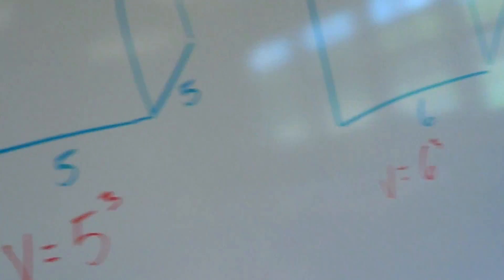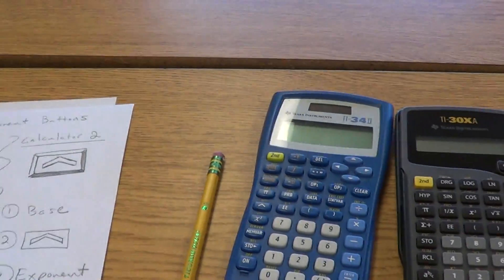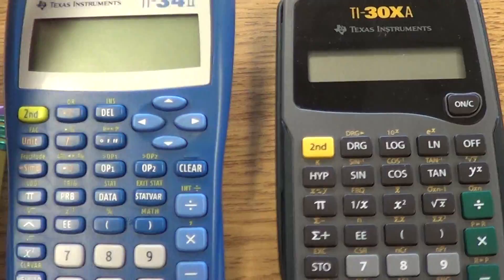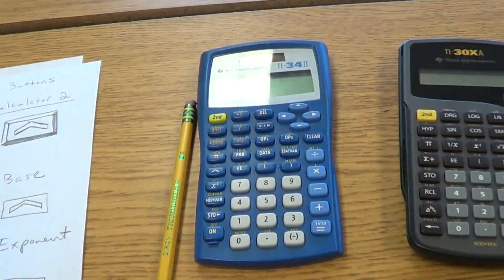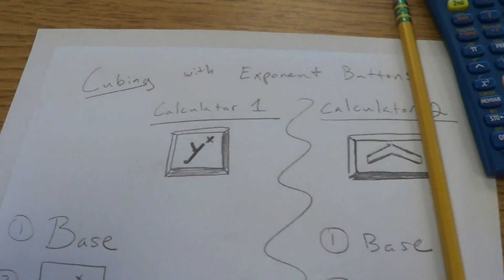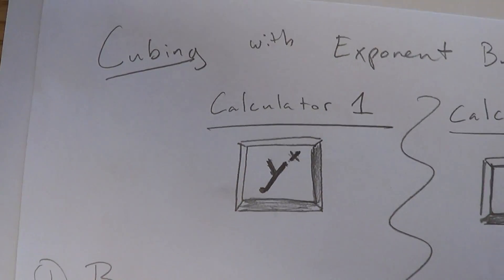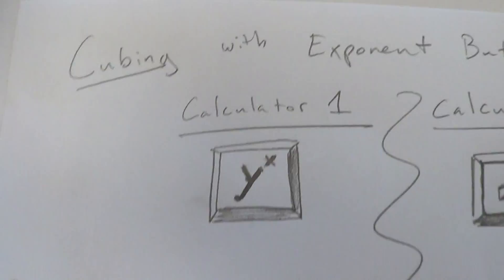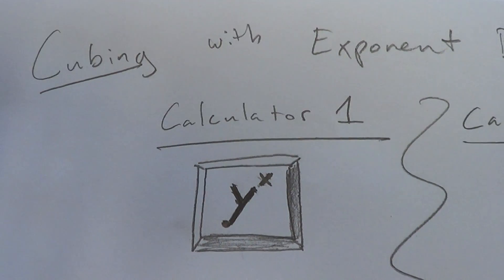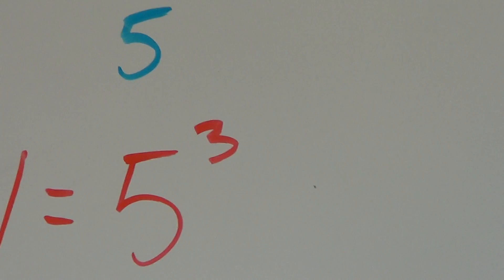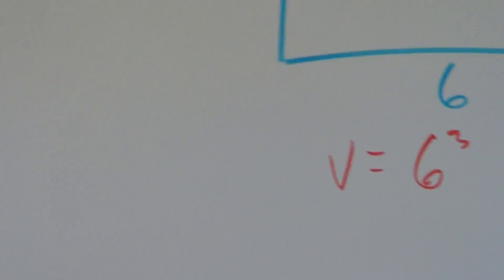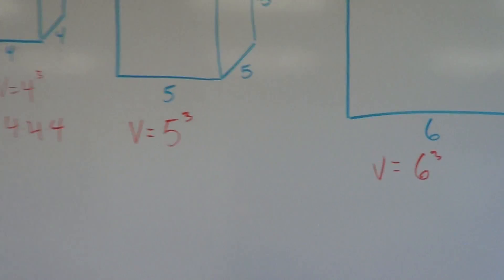Let me show you how to do it on a calculator, because that's what you're going to be doing. I'm going to show you the tale of two calculators. Many of you have one of these calculators at home, and these are the ones we use in class. They're both very similar, so you have to learn two buttons here for cubing. Remember, the exponent is the small floating number — so on 5 cubed the exponent is 3, and on 6 cubed the exponent is 3. When we're cubing the exponent is 3, and when we're squaring the exponent is 2.